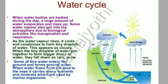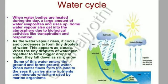When water bodies are heated during the day, a large amount of water evaporates and rises up. Some water vapour also gets into the atmosphere due to biological activities like transpiration and respiration. As the water vapour rises, it cools and condenses to form tiny droplets of water, which appear as clouds. When the tiny droplets join together to form bigger drops, they fall down as rain or snow. Some of this water enters the ground and forms groundwater. When water flows from the land to the seas, it carries many nutrients and minerals which are used by marine organisms. In this way, the water cycle is repeated.